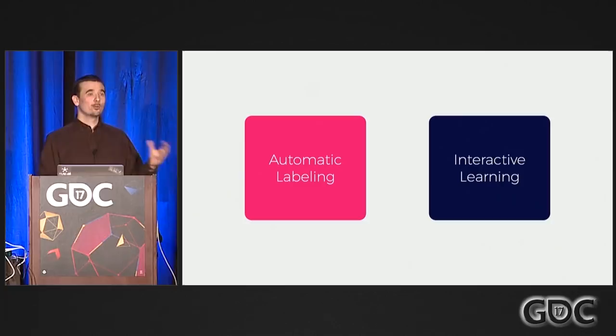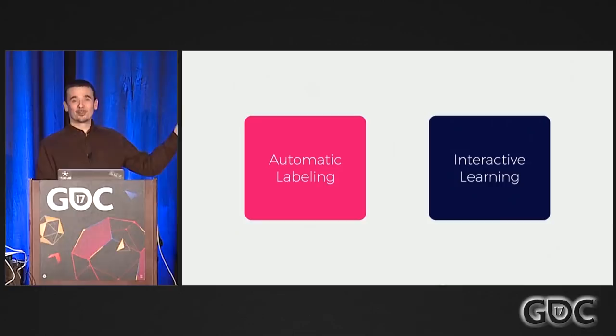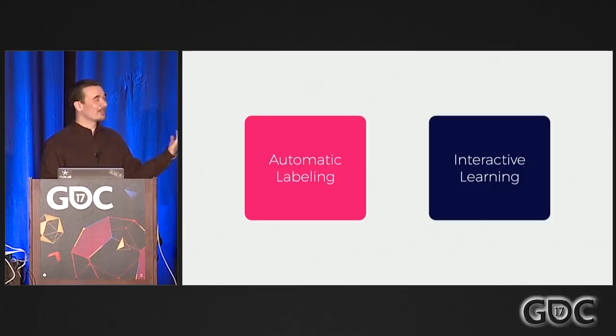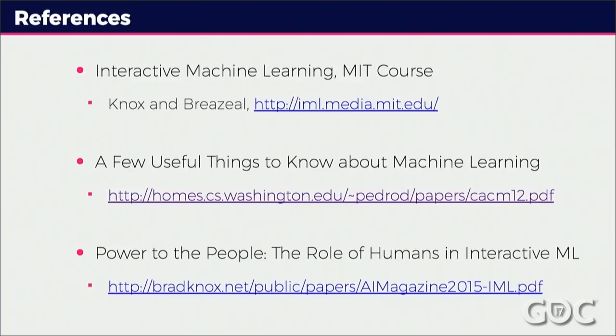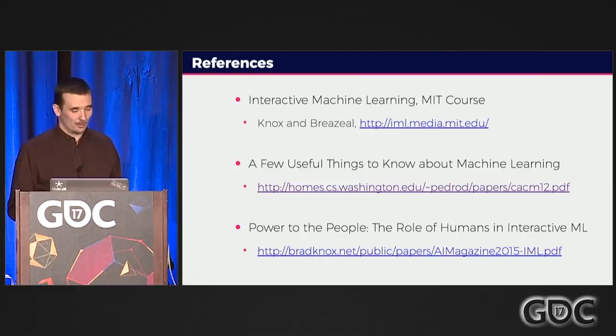Google's data set of 100 million images is actually partly automatically labeled. They didn't go through all those images and manually assign labels — they understand that based on proximity or the structure of the images, items have a certain tag. This is the essence of interactive learning: being able to suggest questions to humans, say 'what is this?', and getting a really valuable piece of data — which is better than having ten times more data of very low value. Here are some references if you want to go into more detail. The slides will be available later.